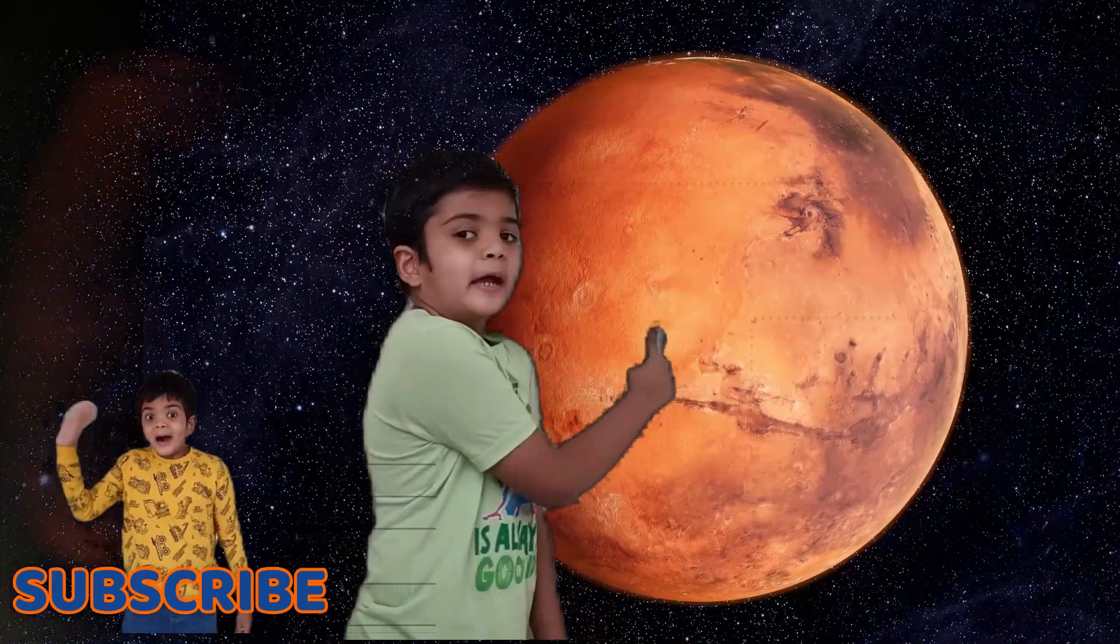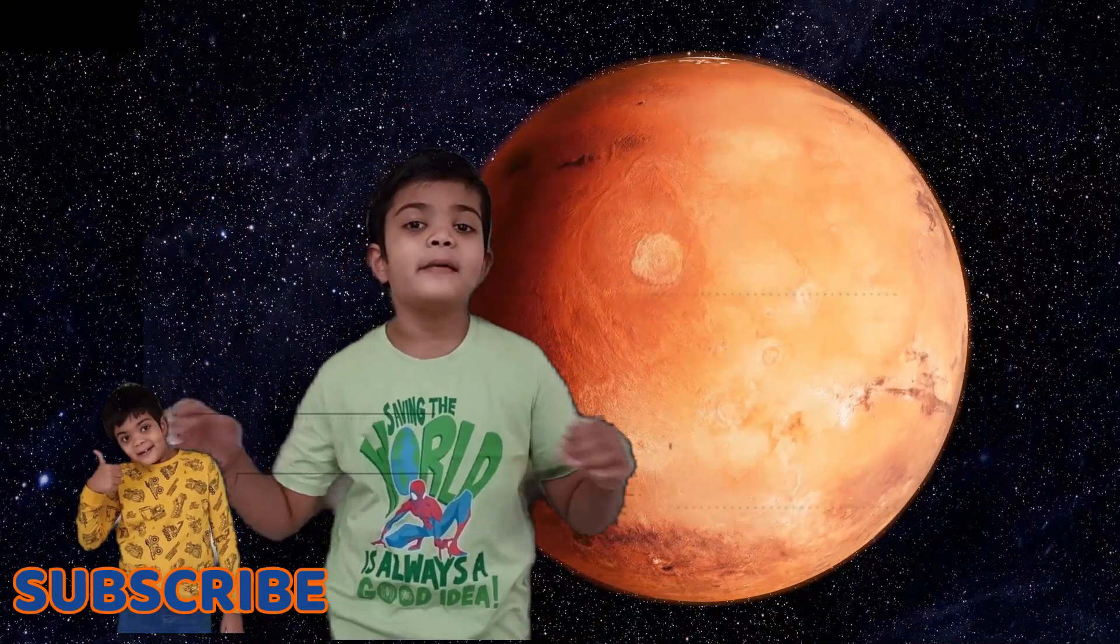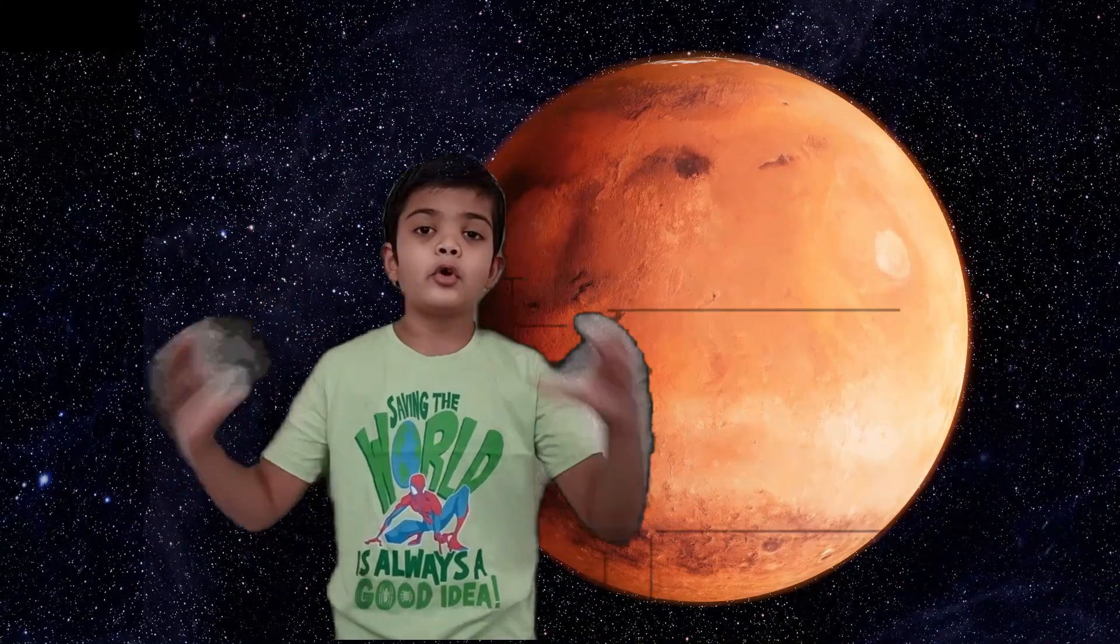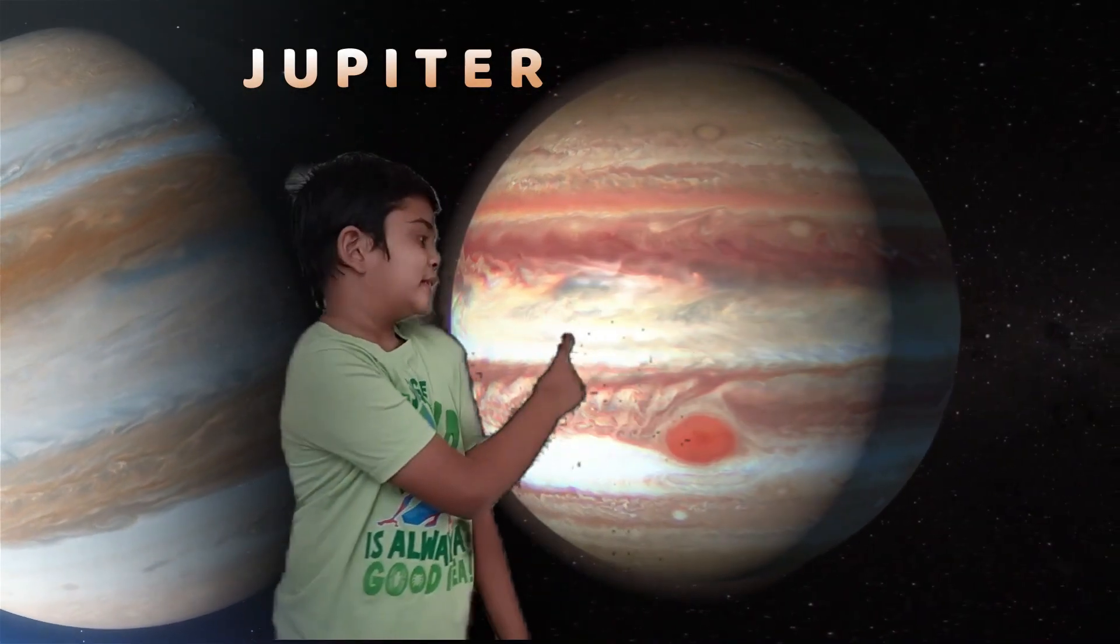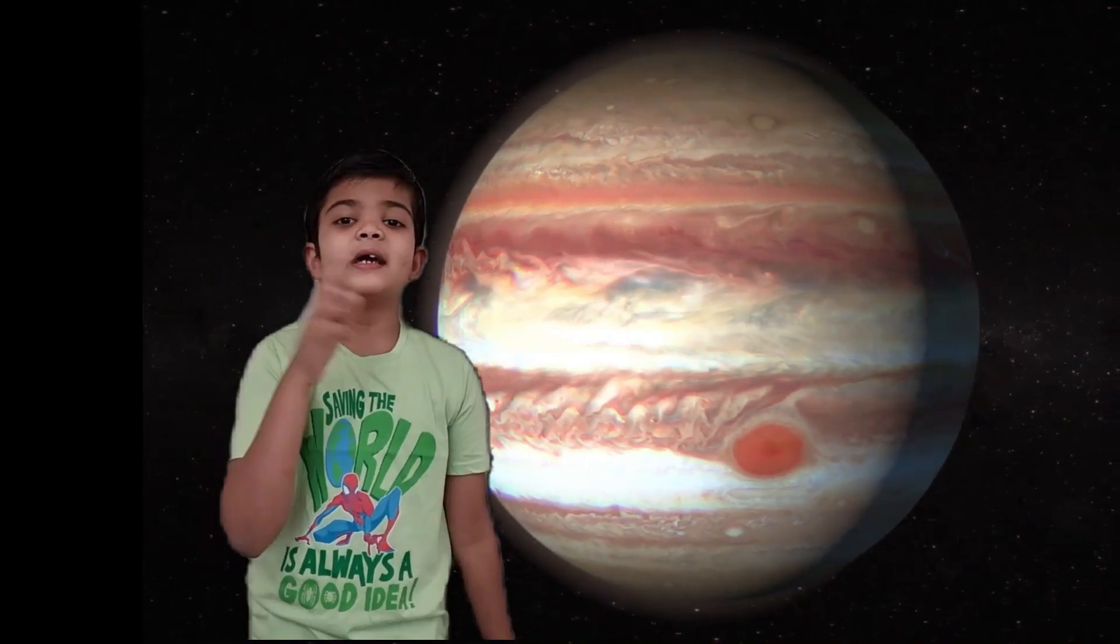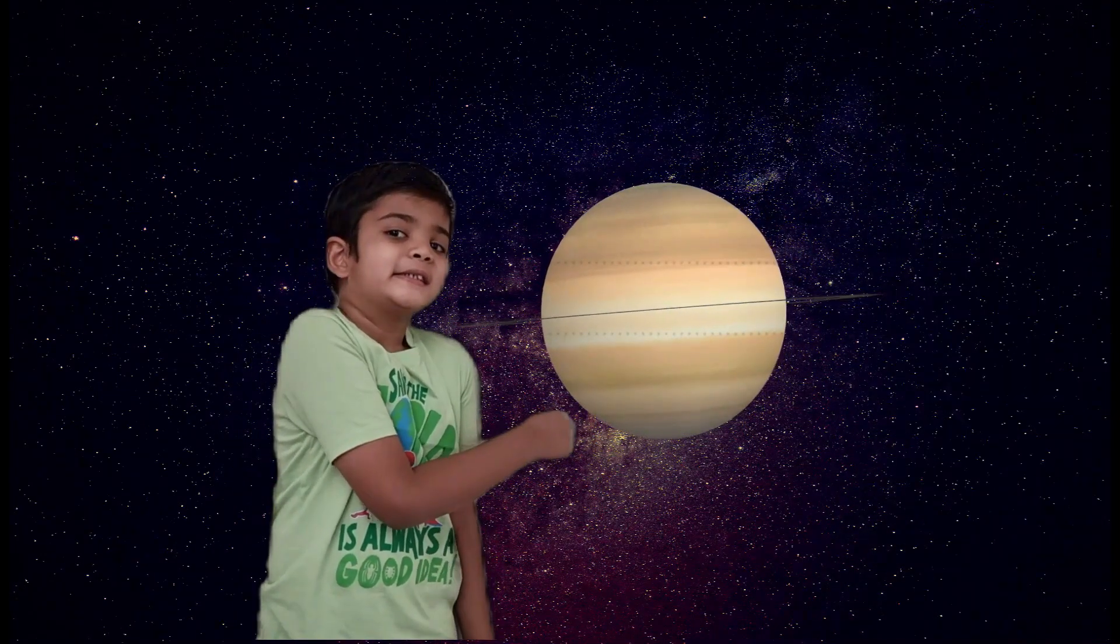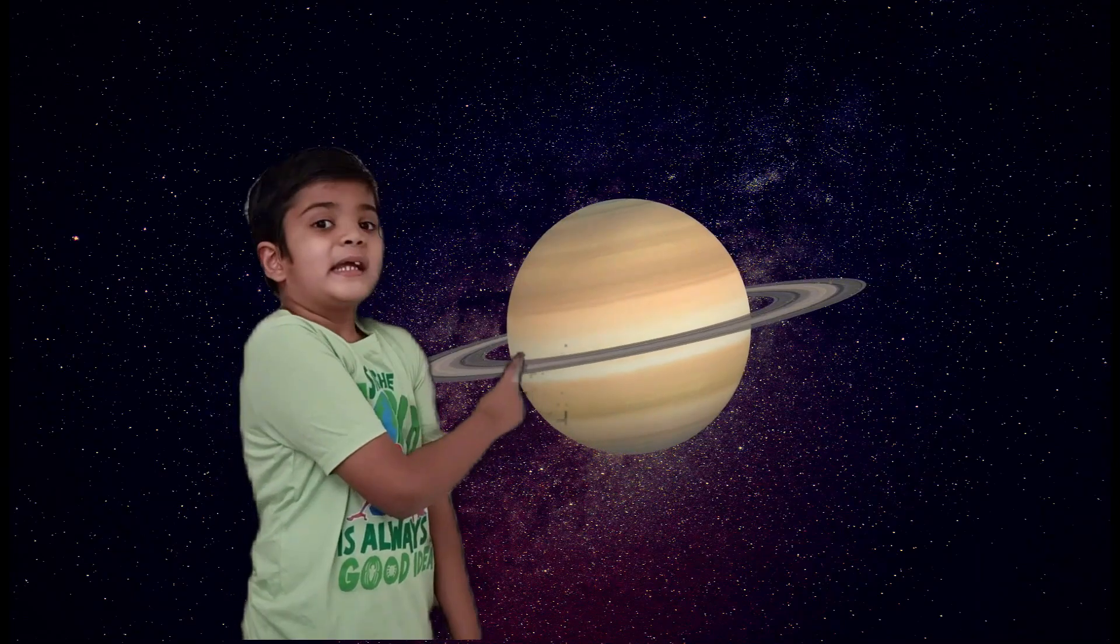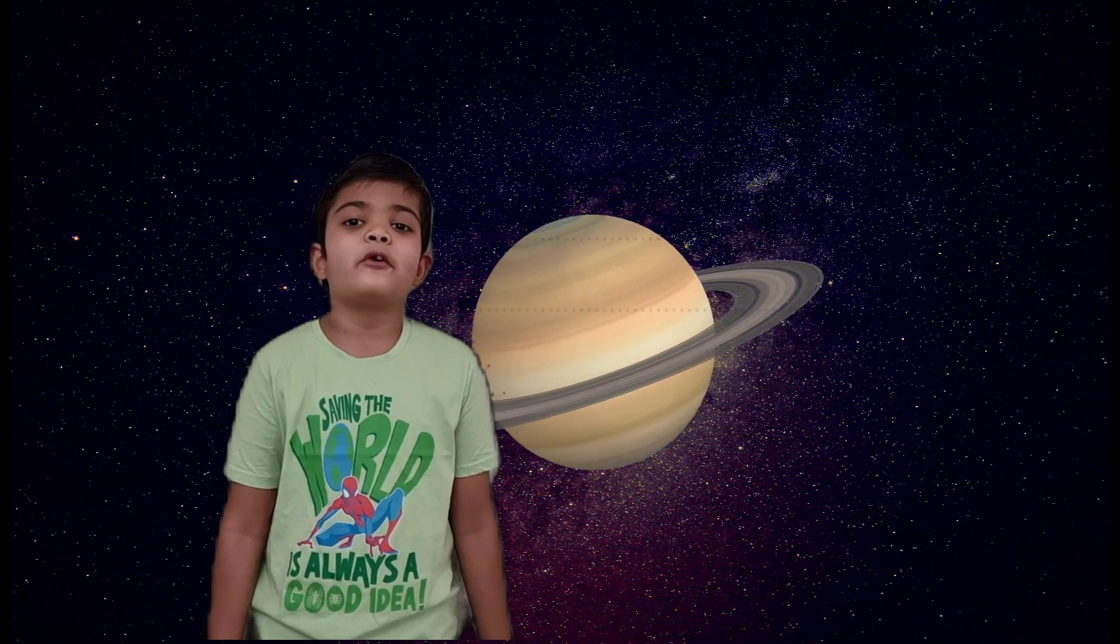Next planet is Mars. Jupiter, this is the largest planet of the solar system. It has a ring around it. Next planet is Saturn, second largest planet. Saturn can float on water because it has less density than water.